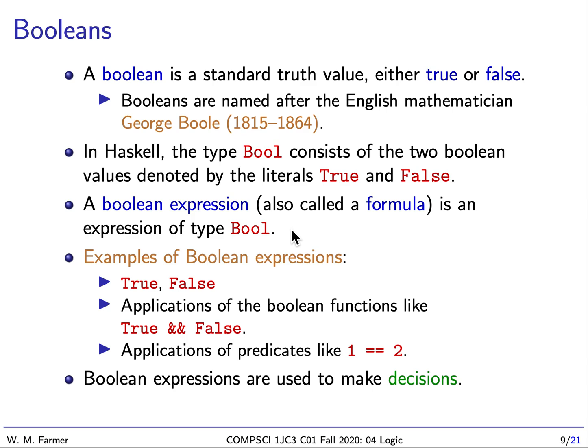Now, in Haskell, the type Bool — B-O-O-L — for some reason we always drop the E from the name Boole. It consists of two Boolean values, and these are denoted by the literals true and false. A Boolean expression, which is also called a formula, is any expression of type Bool — so it's any expression that denotes the value true or the value false.